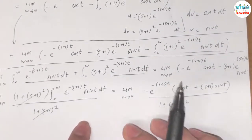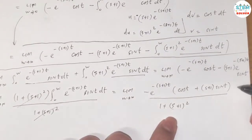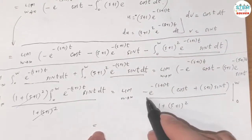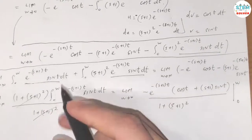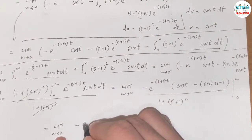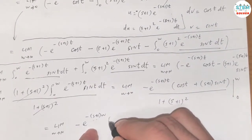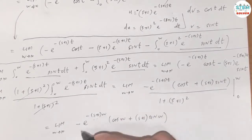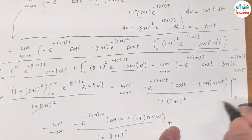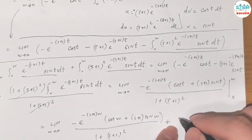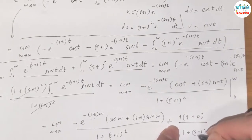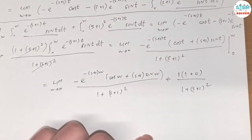Evaluating the boundary terms at w and at 0: plugging in w gives -e^(-(s+1)w)·[cos(w) + (s+1)·sin(w)] all over [1 + (s+1)²]. Plugging in 0 gives: e^0 = 1, cos(0) = 1, sin(0) = 0, so the t=0 term contributes +1 / [1 + (s+1)²].